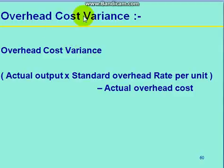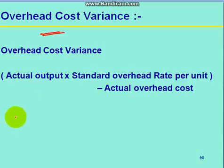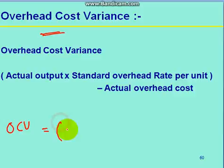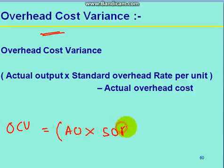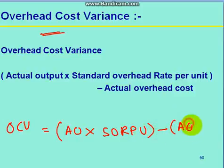What is overhead cost variance? Overhead cost variance is nothing but the actual output into standard overhead rate per unit minus actual overhead cost.